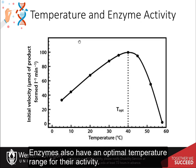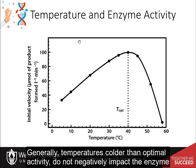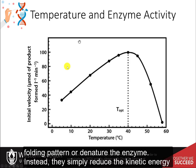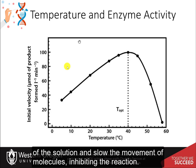Enzymes also have an optimal temperature range for their activity. Generally, temperatures colder than the optimal activity do not negatively impact the enzyme folding pattern or denature the enzyme. Instead, they simply reduce the kinetic energy of the solution and slow the movement of molecules, inhibiting the reaction.